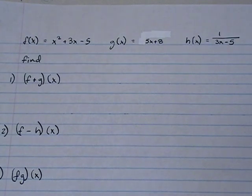Today we're going to work on adding, subtracting, dividing, and multiplying with functions, also called function arithmetic. I've given you three functions. The first function is f of x, which is x squared plus 3x minus 5. The second function is g of x, which is 5x plus 8. And the third function is h of x, which is 1 over 3x minus 5.